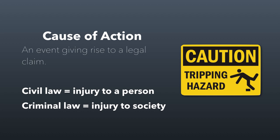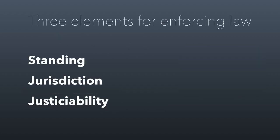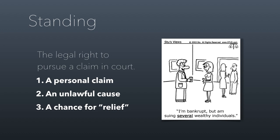You can bring a claim to court if somebody has violated civil law as it relates to you. To bring a claim to court, you need three elements. First, you have to have what's called standing — a legal right to pursue a claim in court. Standing requires that it happened to you personally, meaning you can't bring a legal claim for an injury that happened to your neighbor. Whatever was done has to be against the law, and finally, there has to be a chance for relief, meaning the court has to have a way to fix the problem.